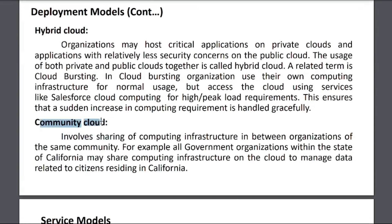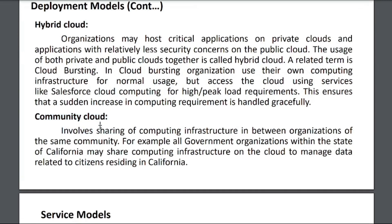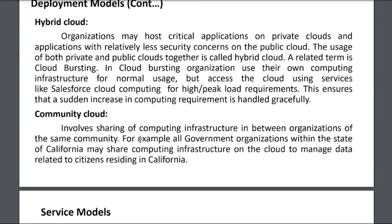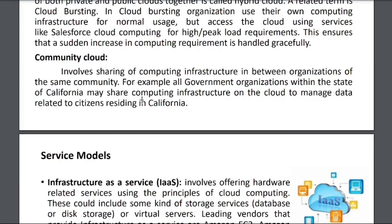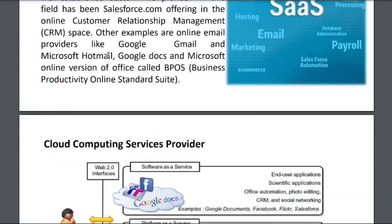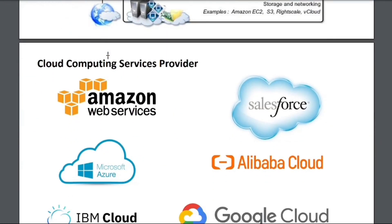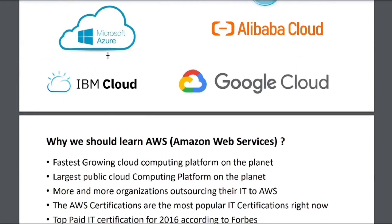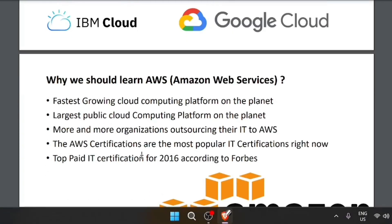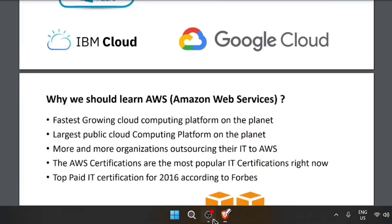Community cloud is basically sharing a computing infrastructure between organizations of the same community — like different departments in an office sharing the same infrastructure, similar to a private community cloud. We have now covered the service models, and from the next class we will learn more about AWS and why we are learning it.